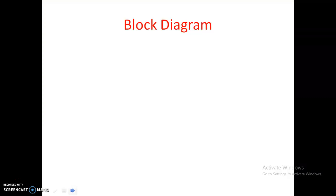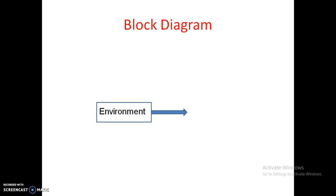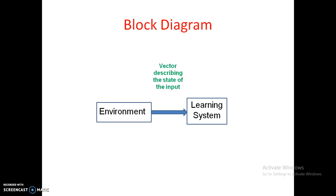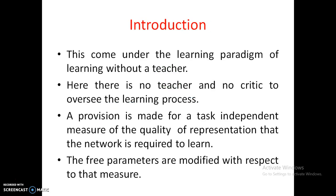Let us see how learning can be done without a teacher. This is the block diagram — it contains simply the environment and the learning system. There are only two things: the environment and the learning system. The environment is directly connected to the learning system, and the vector describing the state of the input is provided to the learning system. With that input only, the learning system has to be trained and has to produce an output.